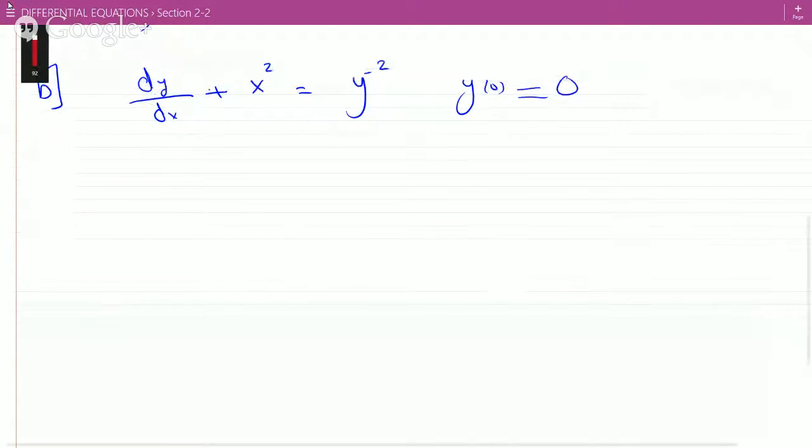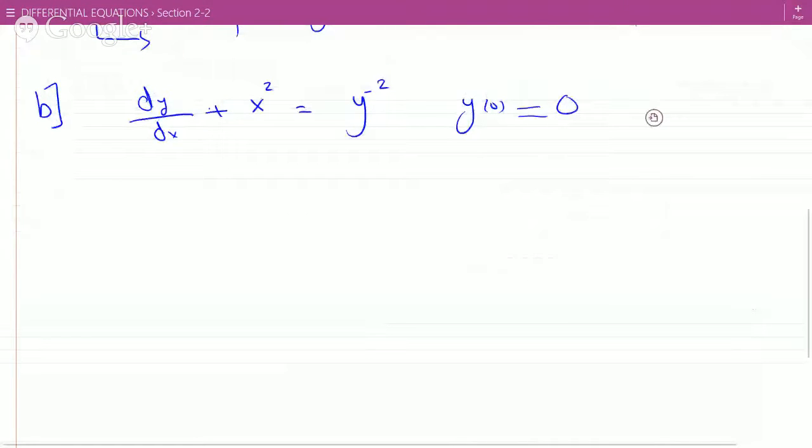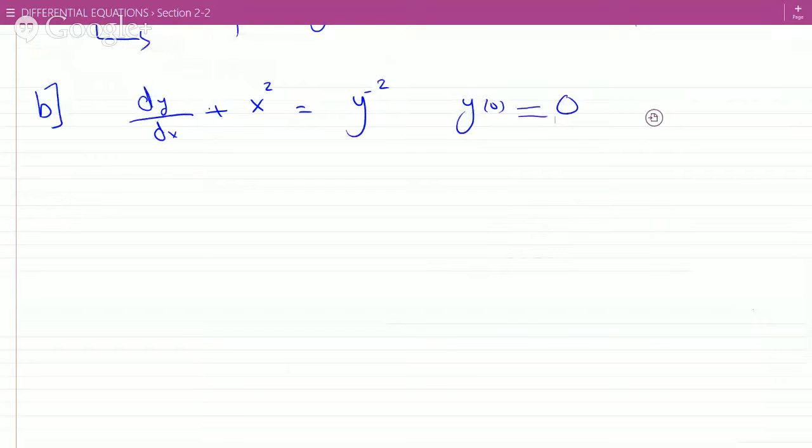So, for this one, does the Existence and Uniqueness theorem guarantee a unique solution to the following initial value problem on some interval?